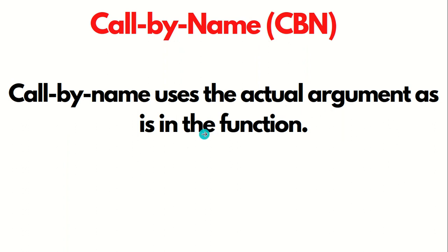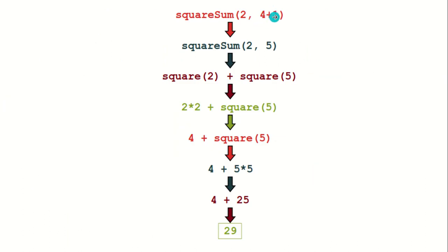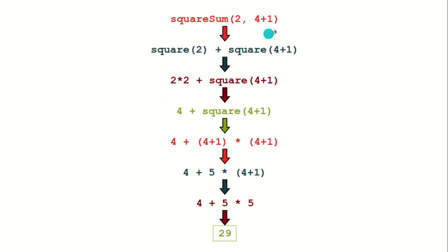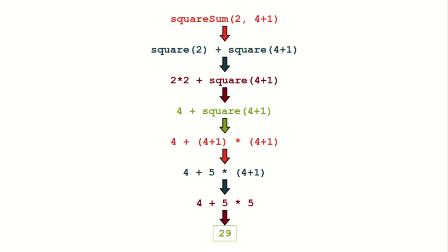Call by name uses the actual argument as it is in the function body. In the previous call-by-value example, four plus one was first evaluated to five before proceeding. But in call by name, that does not happen — it passes things as they are. So squareSum becomes: square two plus square four plus one. First, two times two is evaluated to four. Then four plus one squared: four plus one is passed as is, giving five times five equals 25. So four plus 25 equals 29. In both cases the answer is the same, but the methodology is different.